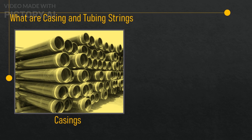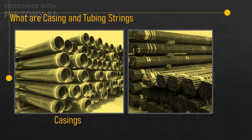Casing is also classified by its API grade, which is a standard set by the American Petroleum Institute that specifies the minimum yield strength, tensile strength, and hardness of the casing material. The API grades range from B to Q to X, with H being the lowest and Q being the highest. The API grade is usually marked on the casing pipe along with the manufacturer's name, the nominal weight, and the OD. Tubing is typically smaller and lighter than casing, and it is measured by its inside diameter (ID) and plain end weight.